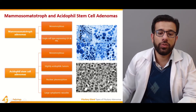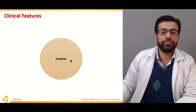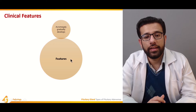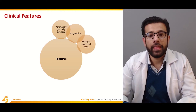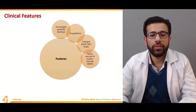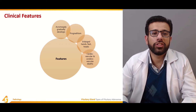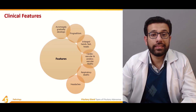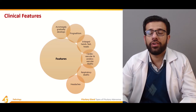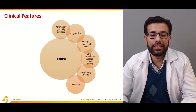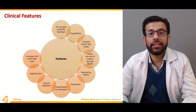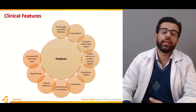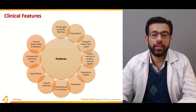The clinical features of acromegaly include gradual onset, prognathism, enlarged hands and feet, and cardiovascular problems. Respiratory distress syndrome can also occur. Additional presentations include headache, paresthesias, muscle weakness, hypertension, and increased left ventricular mass, which can ultimately lead to cardiomyopathies and cardiac hypertrophy.